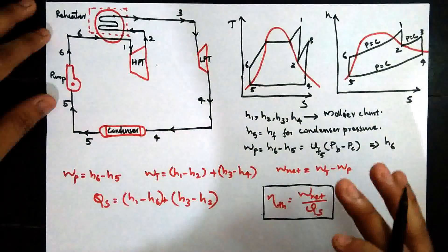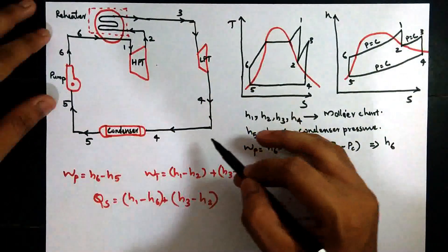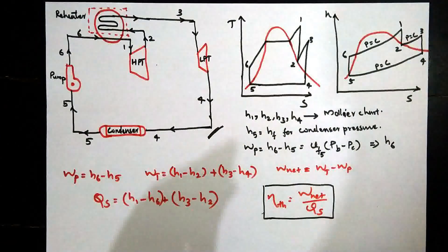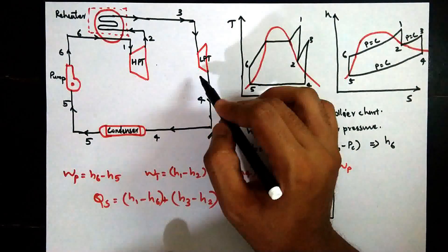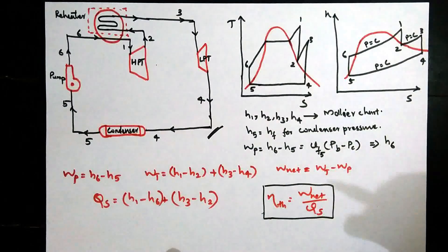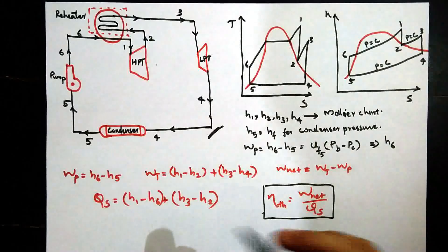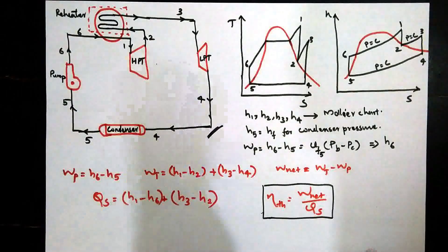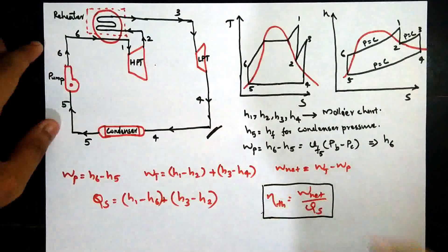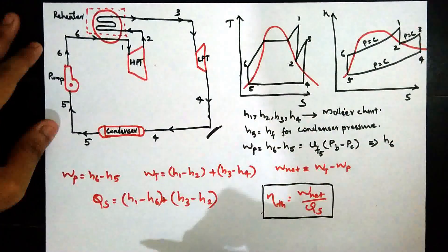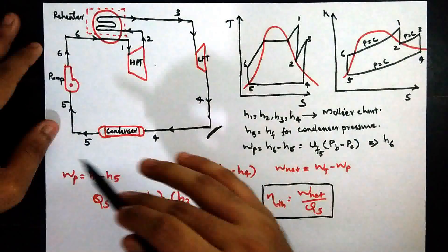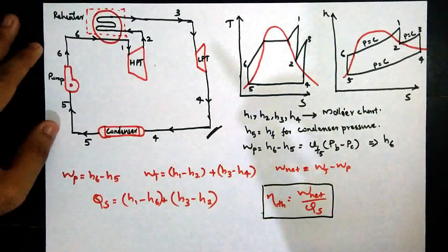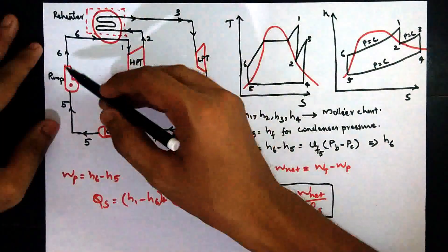To avoid this condition, we employ the reheat cycle. In the reheat cycle, we have two turbines: the first is the high pressure turbine and the second is the low pressure turbine. We reheat the steam between the two turbines. The condenser performs heat rejection at constant pressure. After the condenser, we have low pressure water, which is then converted into high pressure water by the pump.